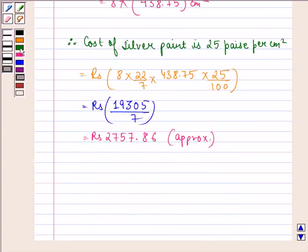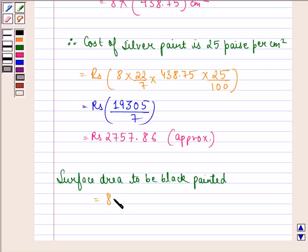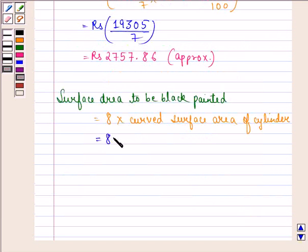Now we find the surface area to be black painted, that is the area of 8 cylinders, or we can say 8 into curved surface area of cylinder. That is equal to 8 into 2πrh, where r is the radius of the cylinder and h is the height of the cylinder.